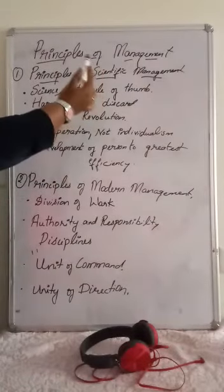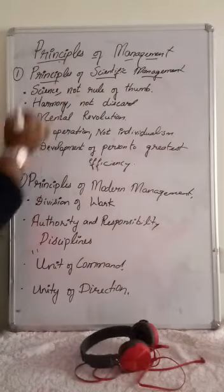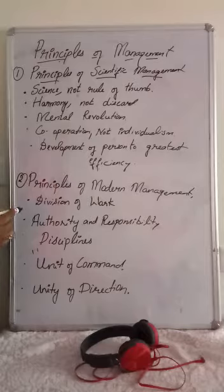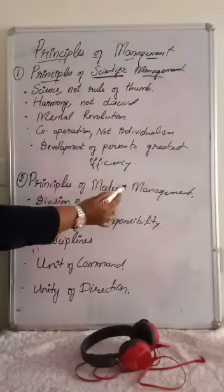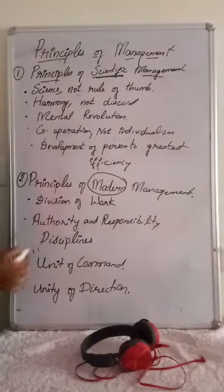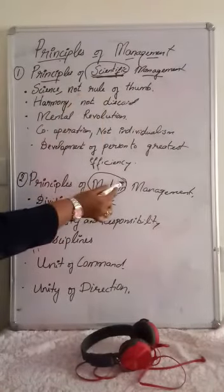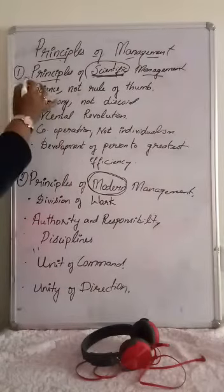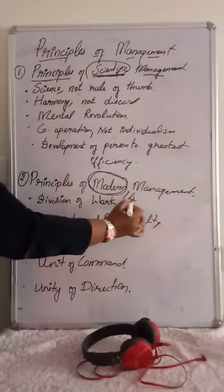The next topic we are going to discuss is principles of management. We have two types of principles: scientific principles and modern principles. Under the scientific principles we have five principles, and under modern principles we have 14 principles.